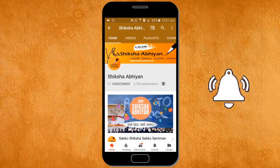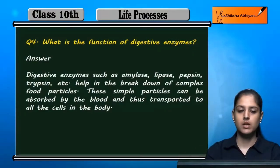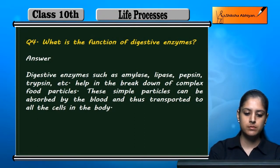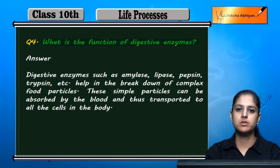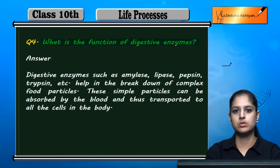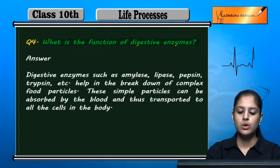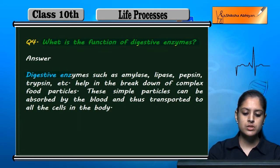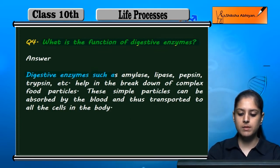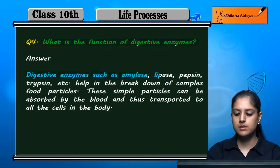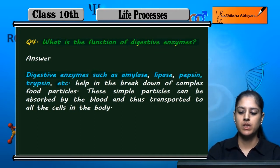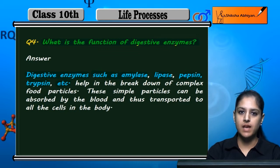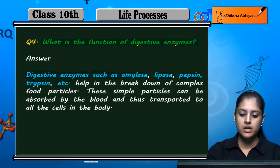Question number four: what is the function of digestive enzymes in the digestive system? Some of their names are amylase, lipase, pepsin, trypsin, etc. These are all digestive enzymes.